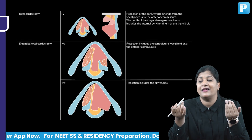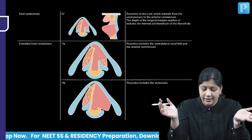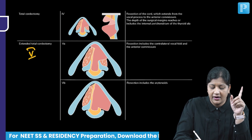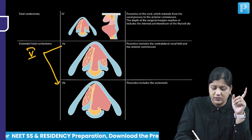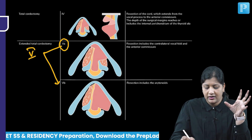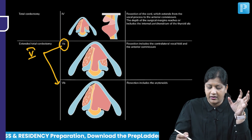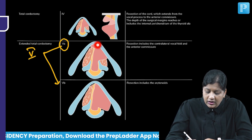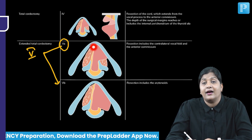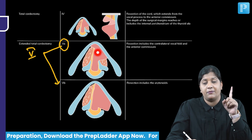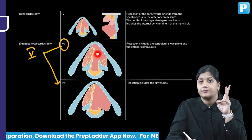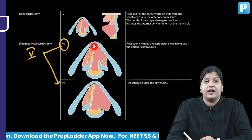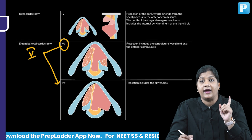Now we are talking about extended chordectomies — this is type 5 surgery, further subdivided into subtypes. What is 5a? Here we are resecting the contralateral anterior commissure as well — resecting the anterior commissure and going to the contralateral anterior third of the vocal fold. On the same side, the epithelium, ligament, and muscle are removed; the anterior commissure is removed; and on the opposite side, we also take off the anterior part of the vocal cord. That is 5a.